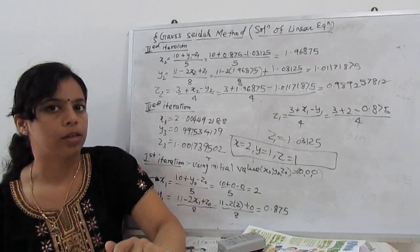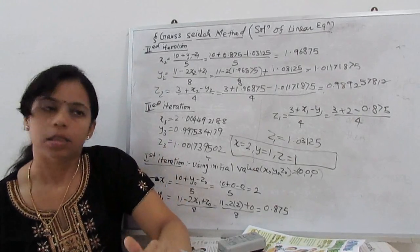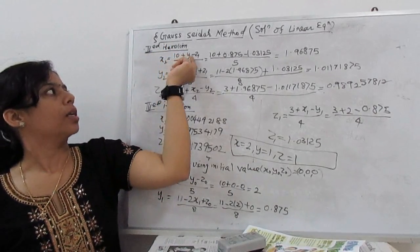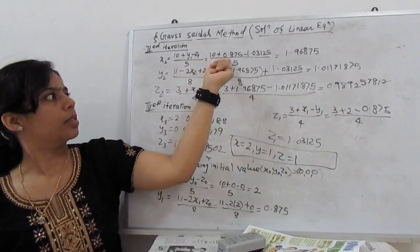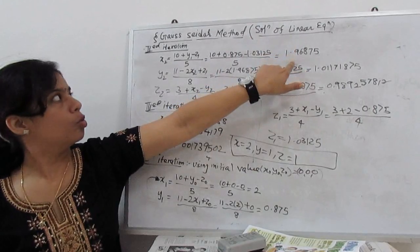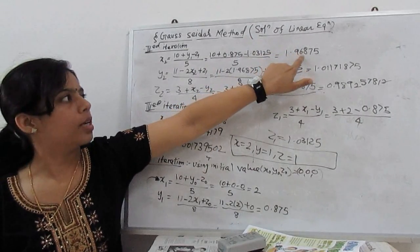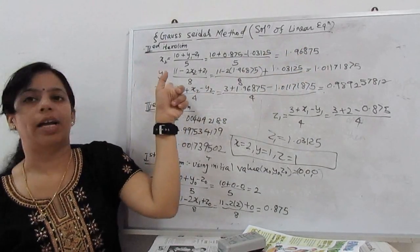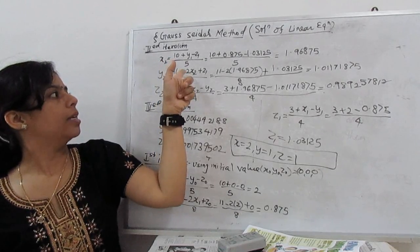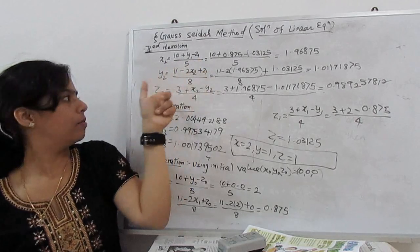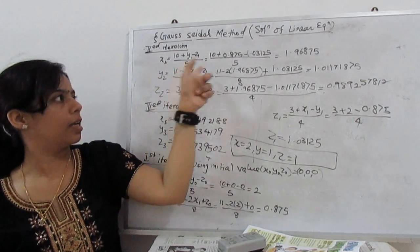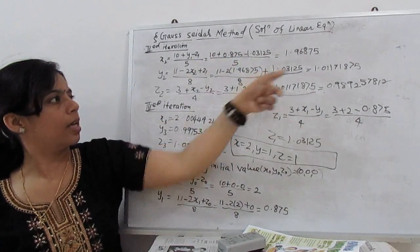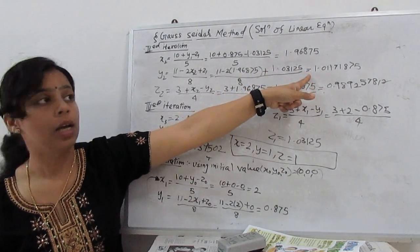We go for the second iteration following the same process. Our X2 is calculated with (10 + Y1 - Z1)/5. I substitute the values here and my new X2 becomes 1.96875. This value we use to calculate Y2. Y2 is (11 - 2X2 + Z1)/8. My new value of Y2 is coming here.